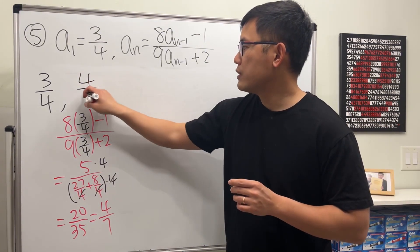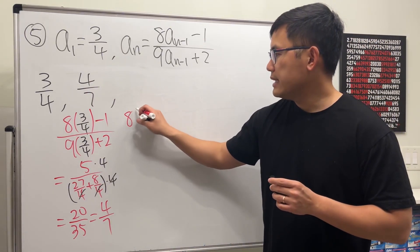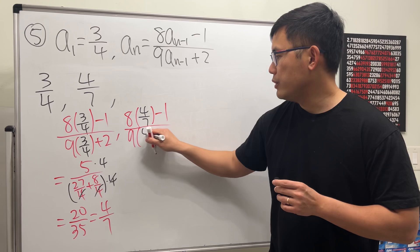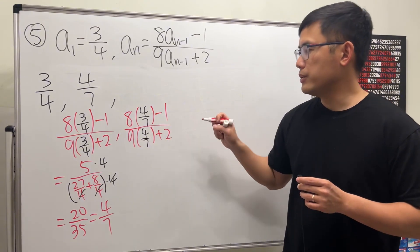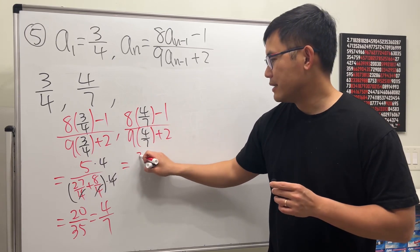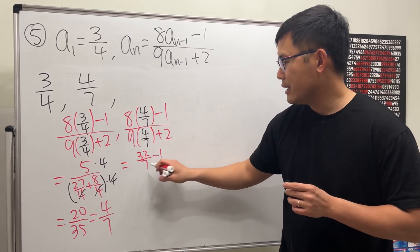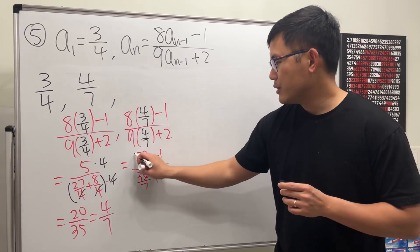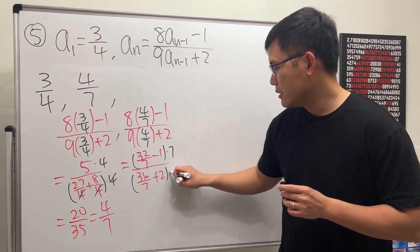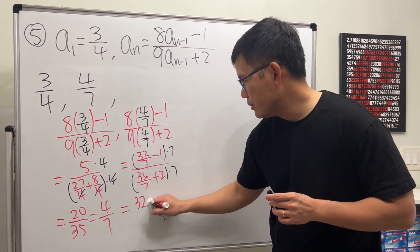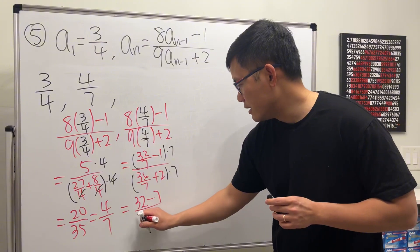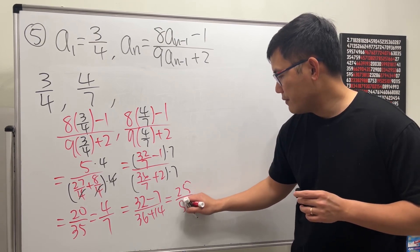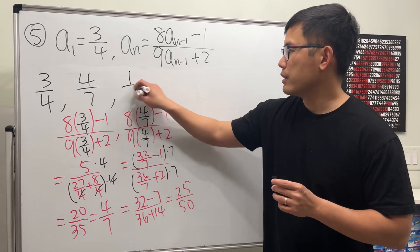Continuing: we do 8 times the previous minus 1 over 9 times the previous plus 2, with previous = 4/7. So 8 times 4/7 is 32/7, minus 1, over 36/7 plus 2. Multiplying top and bottom by 7: numerator is 32 minus 7 equals 25, denominator is 36 plus 14 equals 50. So that's 25/50, which reduces to 1/2.